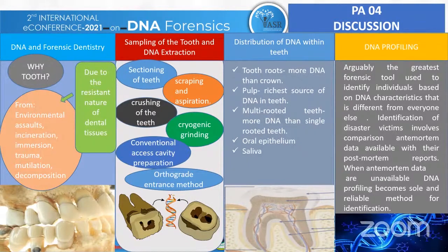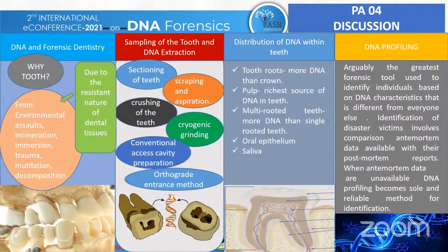Teeth exposed to the environment are likely contaminated with bacteria and environmental contaminants. If these are co-extracted with DNA, they can potentially inhibit PCR amplification, as can calcium and collagen naturally present within the teeth. Various DNA extraction techniques for demineralization include phenol-chloroform, Chelex, silica, and magnetic bead systems.